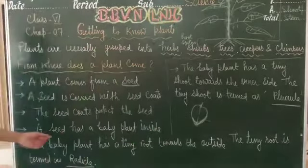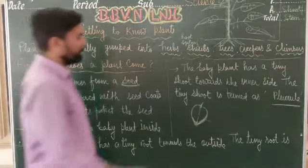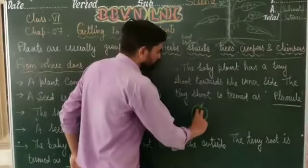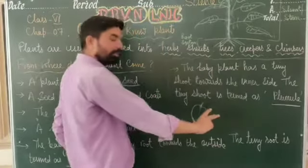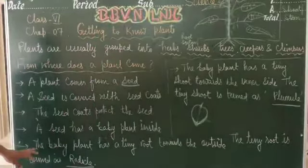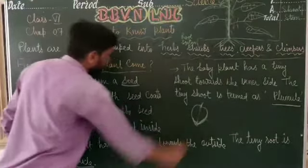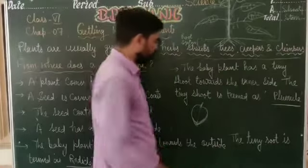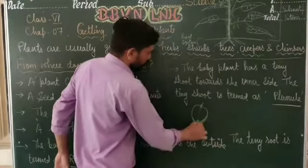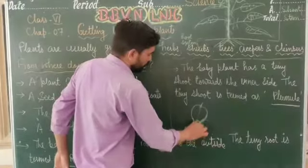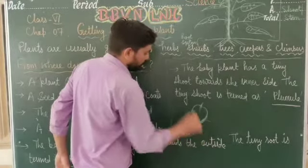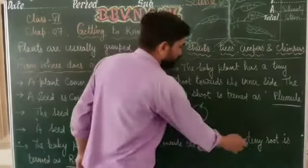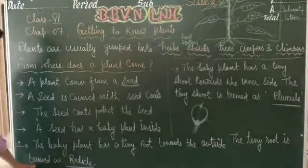A seed has a baby plant inside। इस seed के अंदर एक baby plant होता है, जब इसे favorable conditions मिलती हैं तो यह grow करता है। Baby plant में कुछ structures होते हैं — a baby plant has a tiny root towards the outside। जो structures बाहर निकलती हैं वो roots होती हैं।